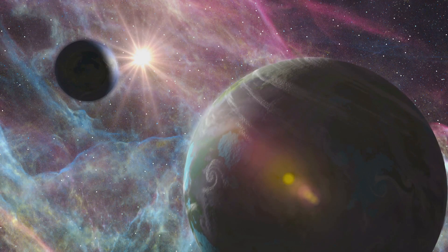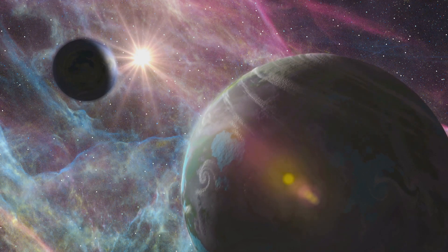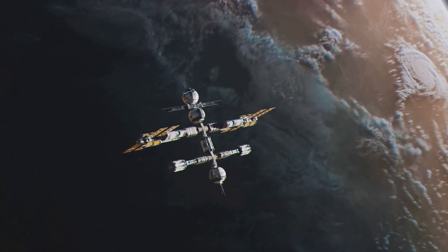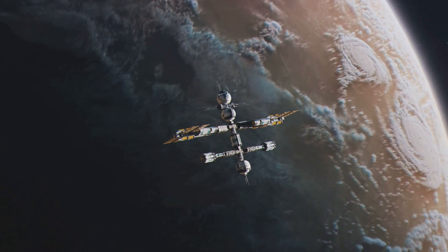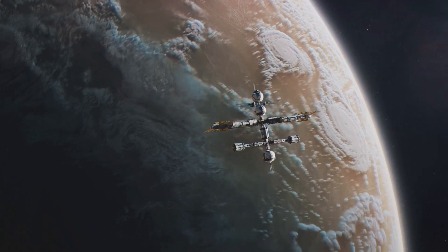Exoplanets come in a mind-boggling variety, from gas giants several times larger than Jupiter to rocky worlds that could be twins of our own Earth. Some are so close to their stars that their surfaces are molten lava, while others orbit at such great distances that they are frozen wastelands.